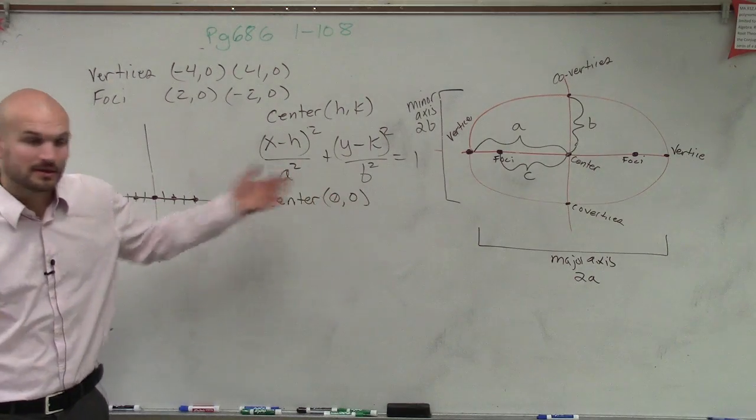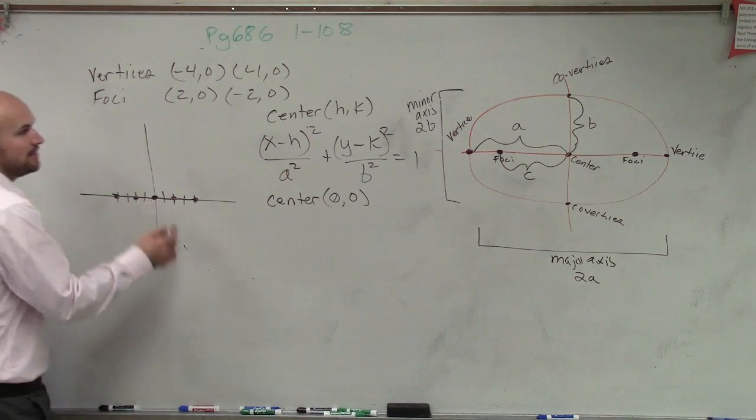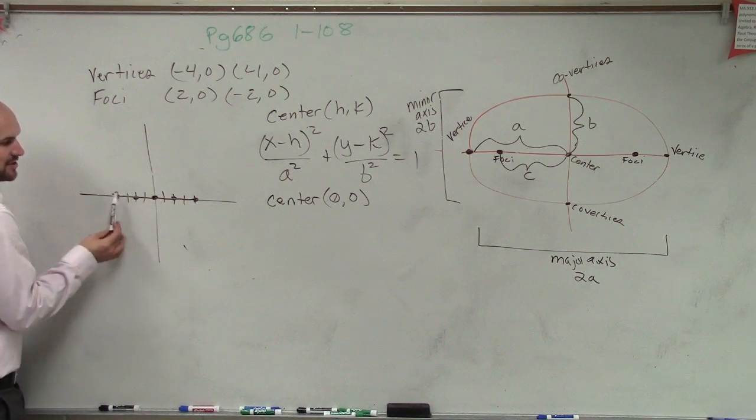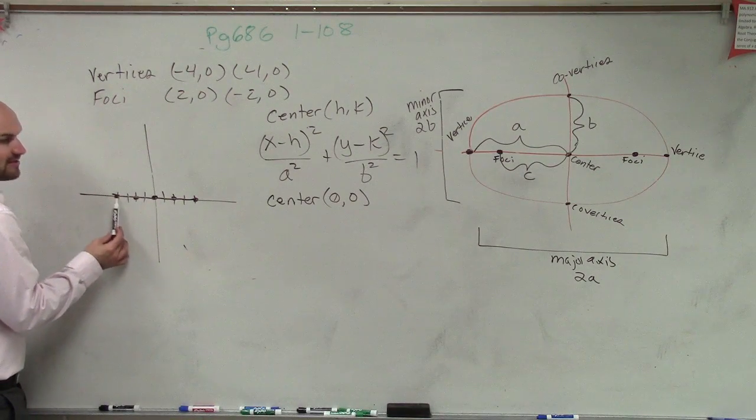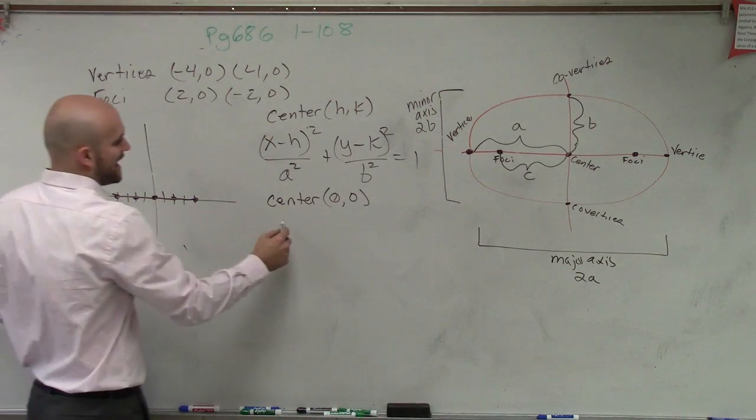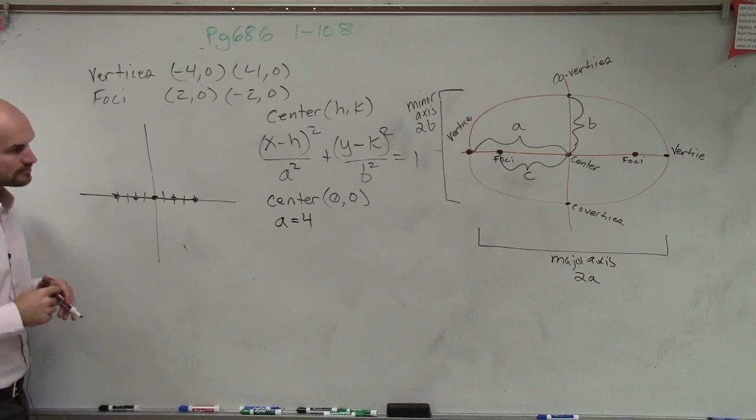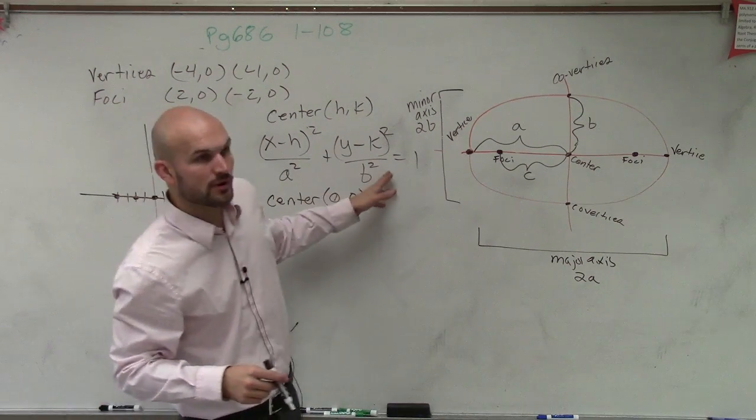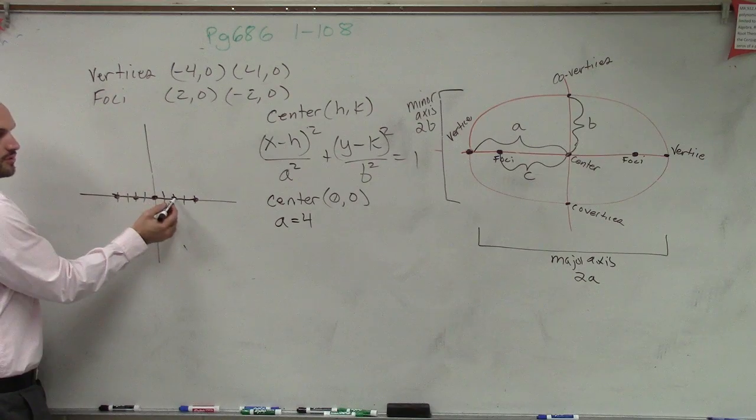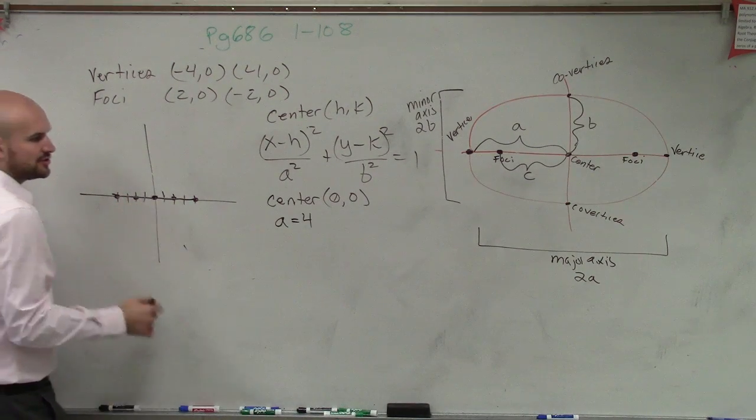And then our a - remember, a is the distance from the center to your vertice. So to go from center to vertice, I go over 1, 2, 3, 4. It can be negative 4, it doesn't matter, you're squaring it. But you can say a equals 4. And we don't know what b squared is, but we do know what c squared is. And c equals 2, right? The distance from the center to your vertice.